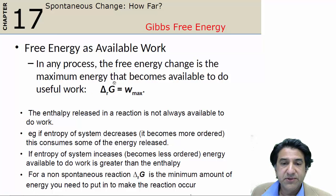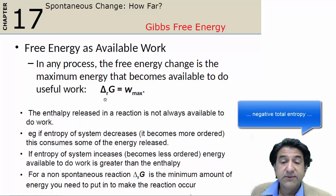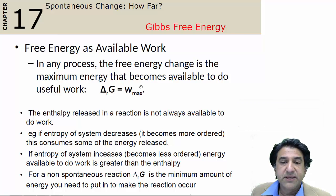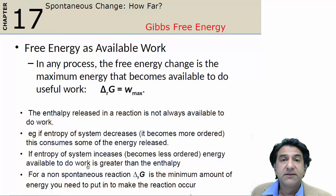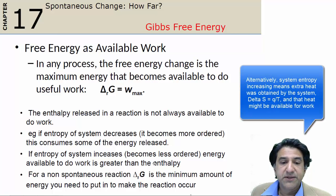We have the possibility of getting work from that increase in disorder, because delta G is essentially a proxy for disorder. Delta G, which is essentially negative entropy, tells you that negative entropy is related to the amount of work that's available from the system. So just by virtue of the fact that the system becomes more disordered, that allows work to be obtained from that chemical reaction.